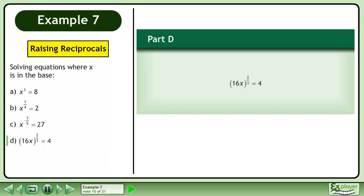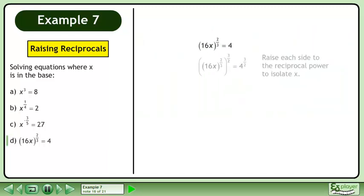In part D, solve 16x raised to the power of 2 over 3 equals 4. Raise each side to the reciprocal power to isolate x. Write the power as a radical.